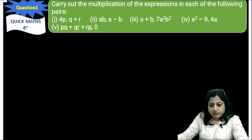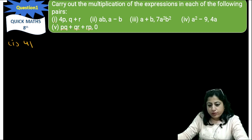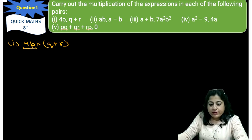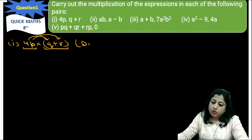The first pair in which we have to carry out the multiplication is 4p multiplied by (q + r). One term is monomial and the second is binomial. We will multiply 4p with q and then 4p with r. This is the distributive law.